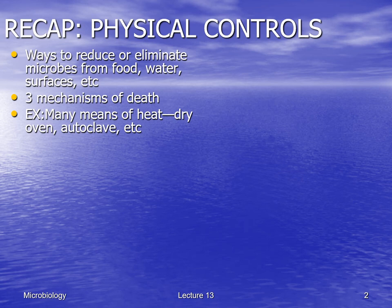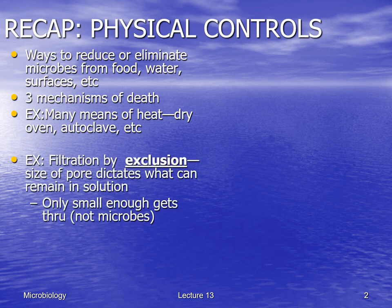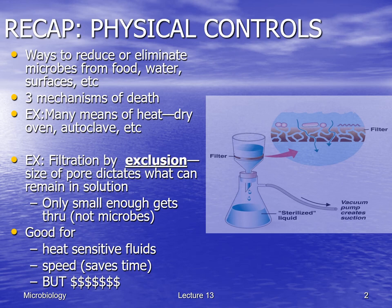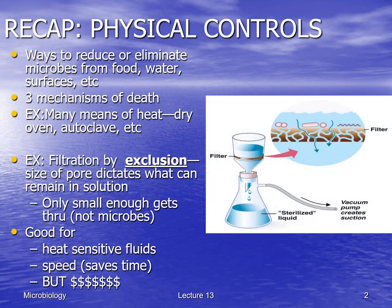We're looking at one mechanism of physical control — heat — which has many forms, such as a dry oven and autoclave. We're also finishing up with filtration. Filtration works by excluding microbes: you have microbes in a liquid or gas, run them through pores, and the size of the pores dictates what can get through. The microbes are excluded because the pores are too small for them.